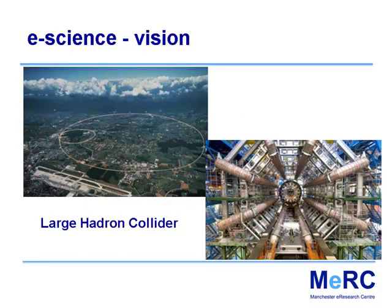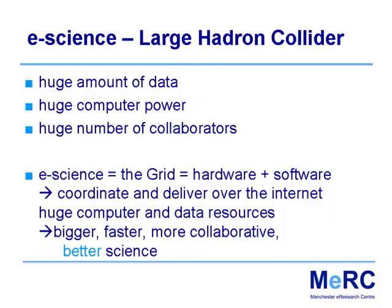The vision of e-science in the early 2000s was the Large Hadron Collider — billions spent, they broke it on the first day, but it's more or less repaired now. In this e-science vision: huge amounts of data — people like telling you how many telephone books it would take — huge computer power, no one computer can deal with it, you have to draw on all the supercomputers in the world. A huge number of collaborators, with no end of countries involved. The grid is the hardware and software to coordinate and deliver over the internet huge computer and data resources. Bigger, faster, more collaborative means better science — that's the launch vision of the e-science programme.